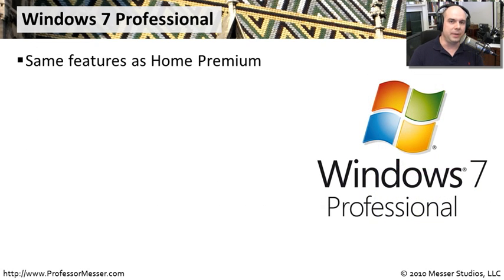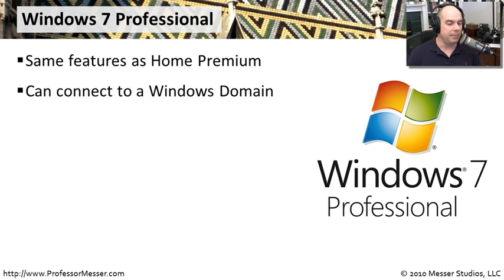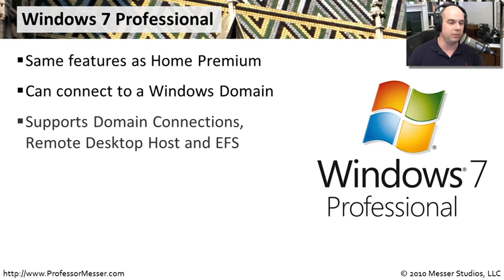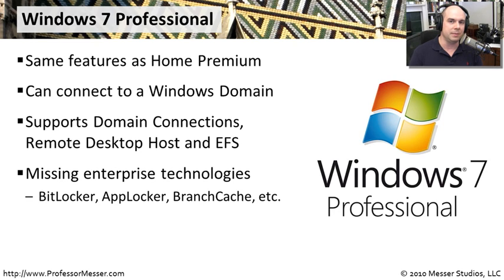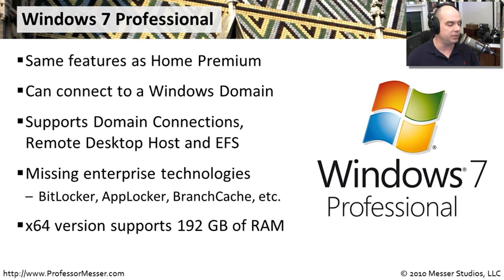Windows 7 Professional was designed to be one step ahead of a consumer version. It has all the capabilities of Home Premium, but this version can actually connect to a Windows domain — important if your computer needs to be managed and exchange information with that domain. It also supports remote desktop host and EFS, providing enterprise-type encryption and remote access functionality. However, it's still missing some more advanced functions like BitLocker, AppLocker, and BranchCache, so it's not fully featured, but it may fit the bill for most people working in a small or enterprise business environment.